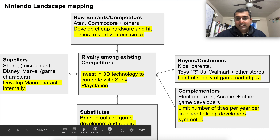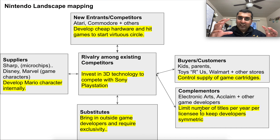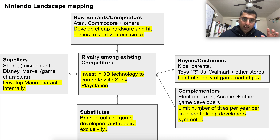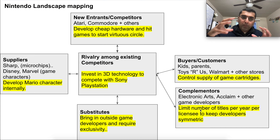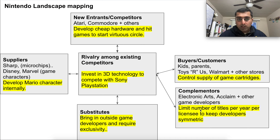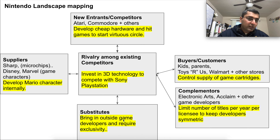For complementors, they would limit title licenses to keep a symmetric developer-versus-game-license agreement — if it becomes asymmetric, it's not good for business. For each area in the landscape, they've now put in a decision they'll implement. That decision is powerful because it increases barriers to entry, increases their power structure, and makes it harder for competitors to compete. If they get exclusive rights for game developers, it becomes harder for competitors to substitute them. This is Nintendo's landscape mapping.